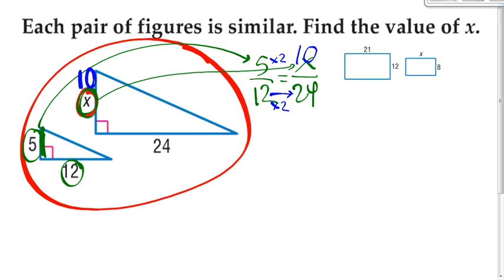A harder way to check this using cross-multiplication involves algebra. And we're going to do 12 times x, which is 12x. And we're going to set that equal to the other side, which would be 5 times 24. We're going to go ahead and solve 24 times 5.